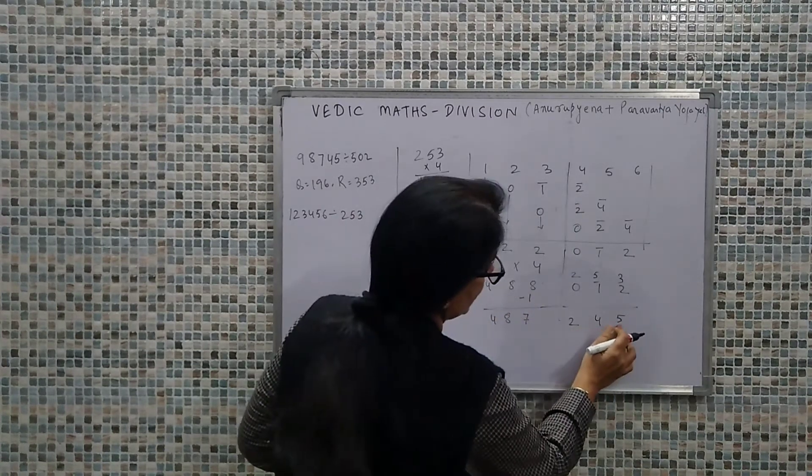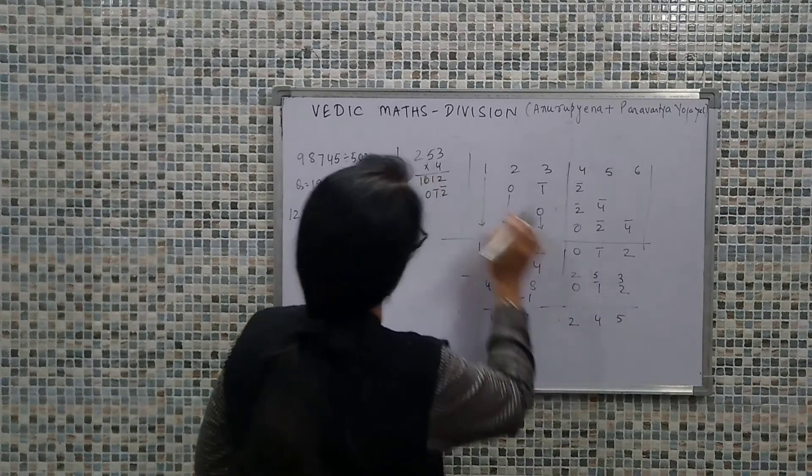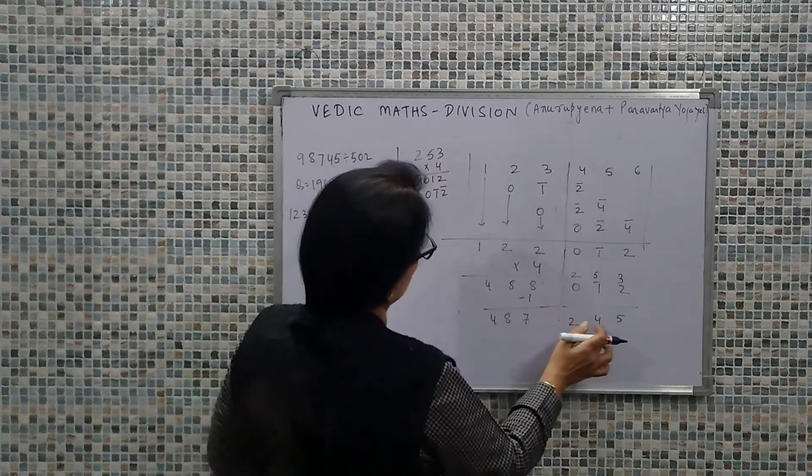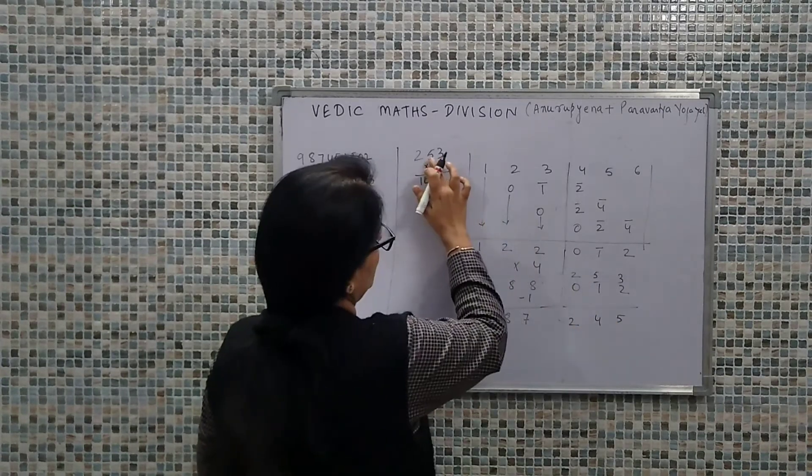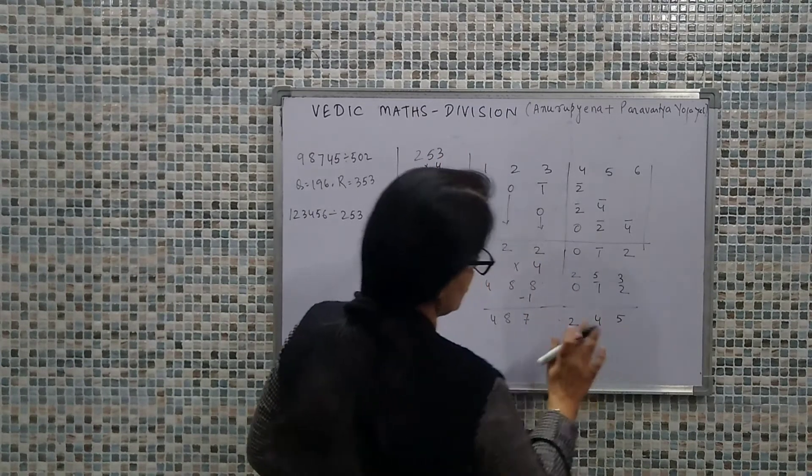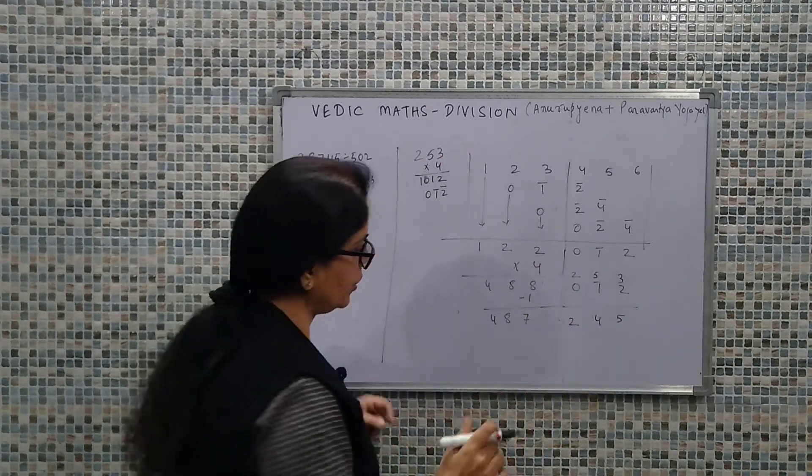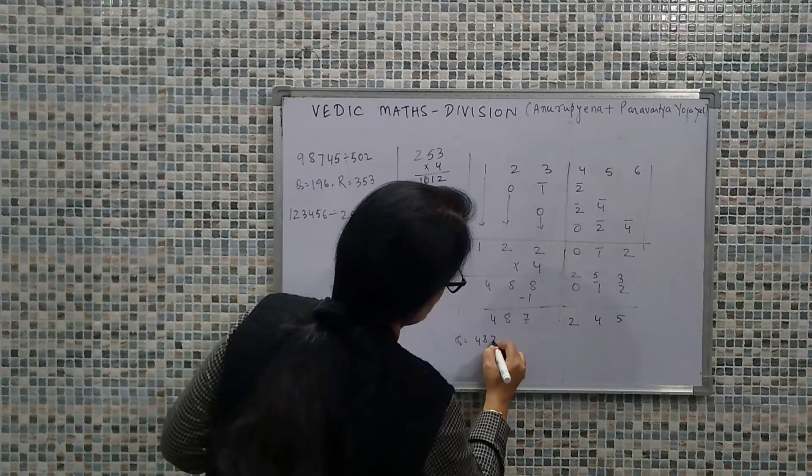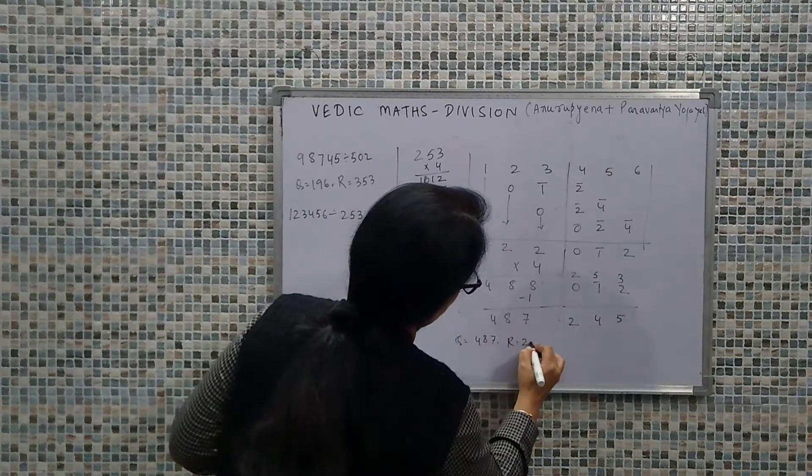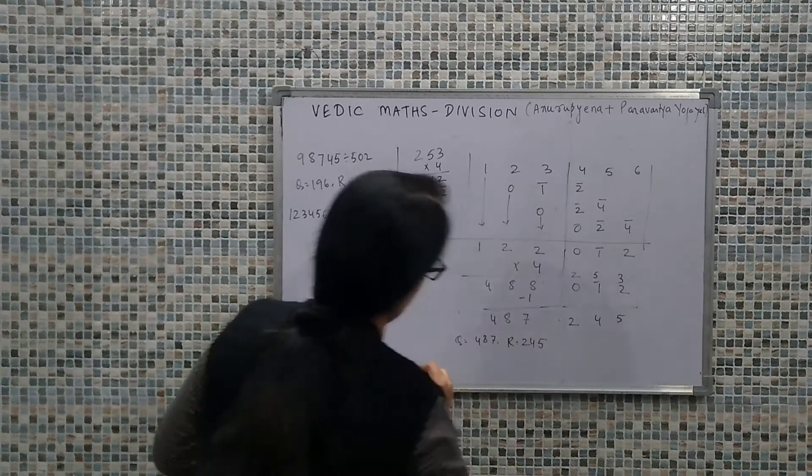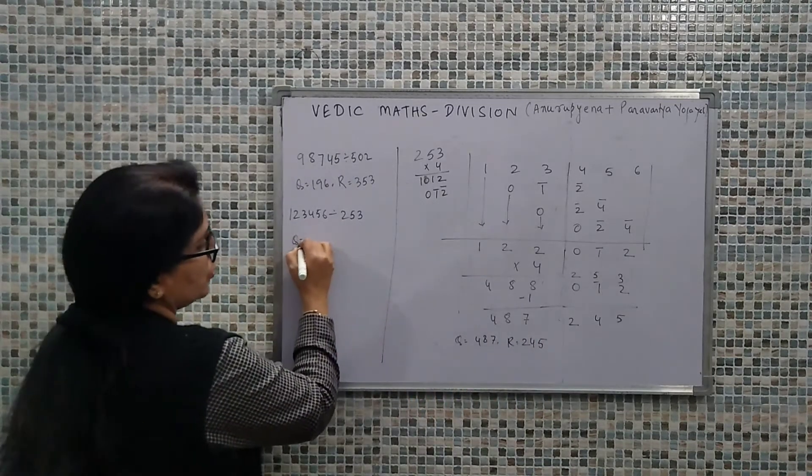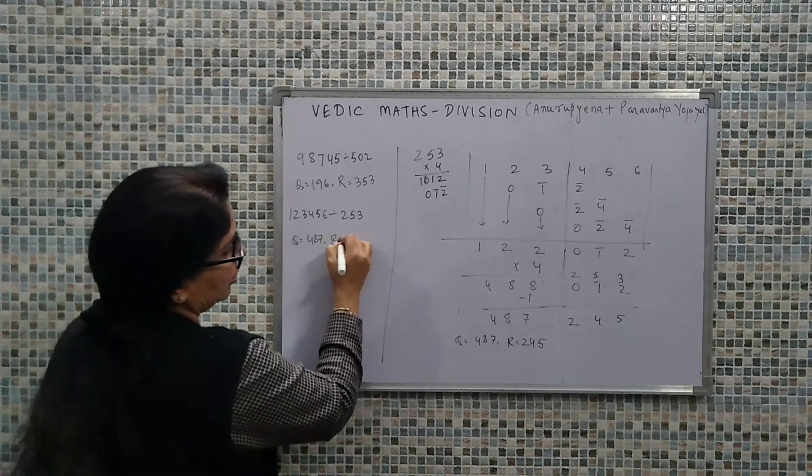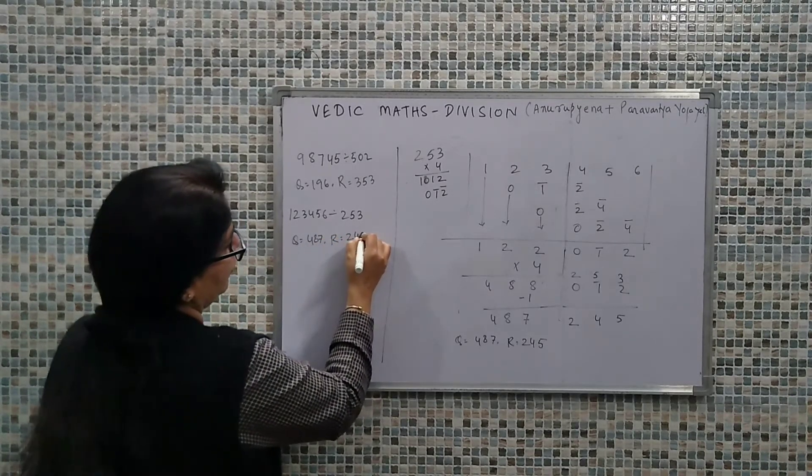Now if we compare this value, this value is less than the divisor. Our divisor is 253. Remainder is 245. So we are there with the final answer. The quotient is 487 and the remainder is 245.